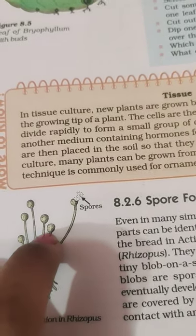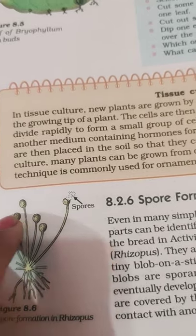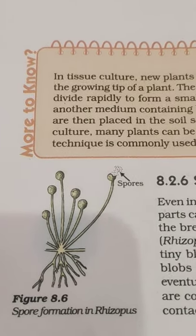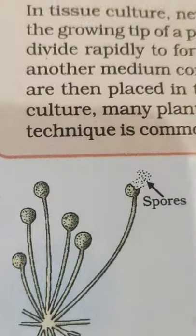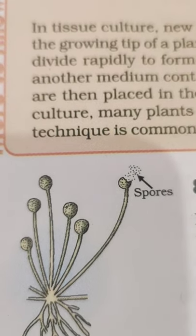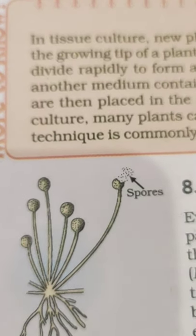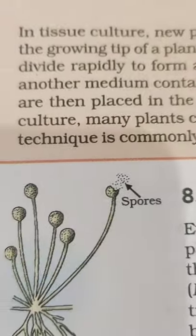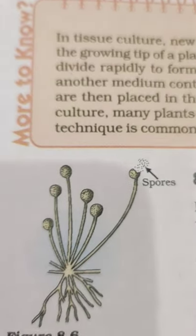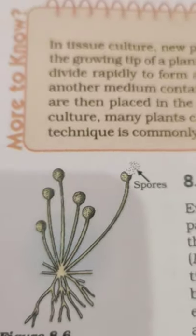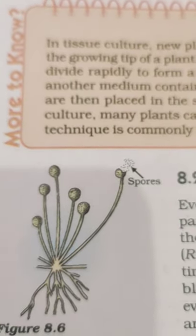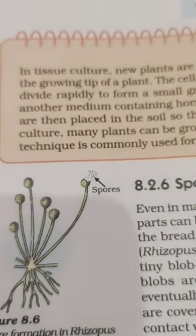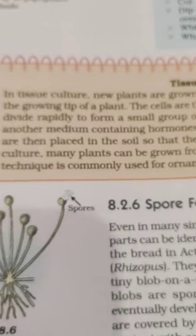The hyphae have knob-like structures called sporangia (or sporangium). These sporangia contain hundreds or thousands of minute spores. When the spore cases burst, the tiny spores are dispersed all around in the air. These spores are asexual reproductive units that can further produce more bread mold plants whenever conditions are favorable.